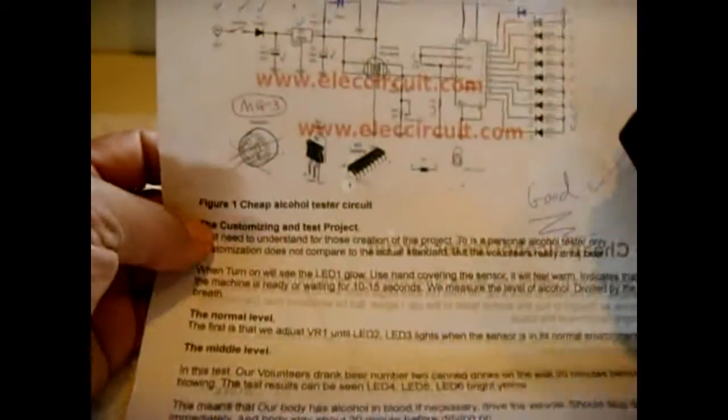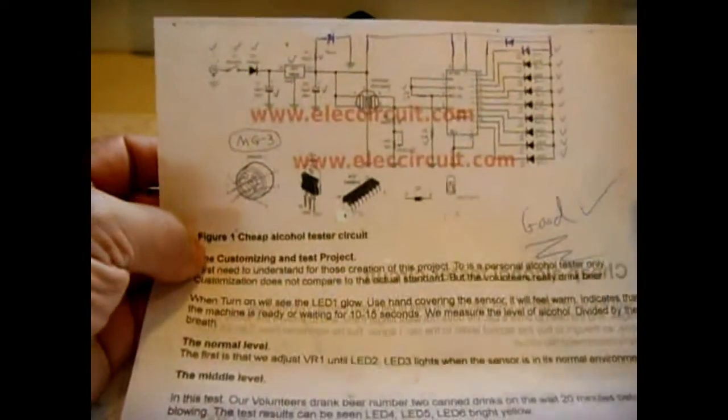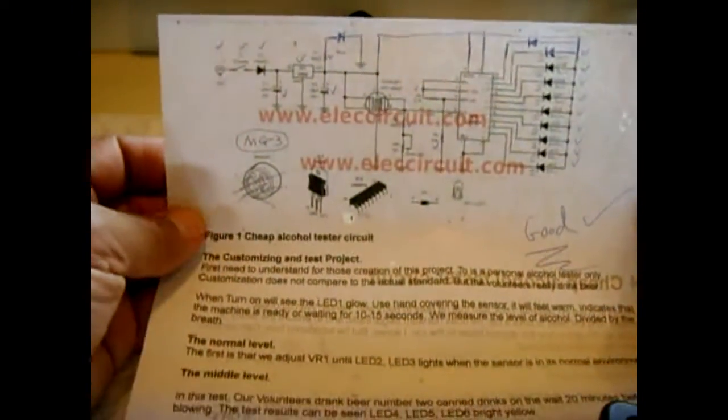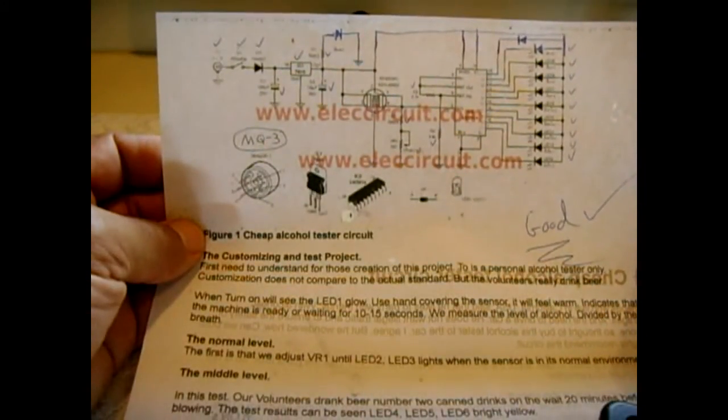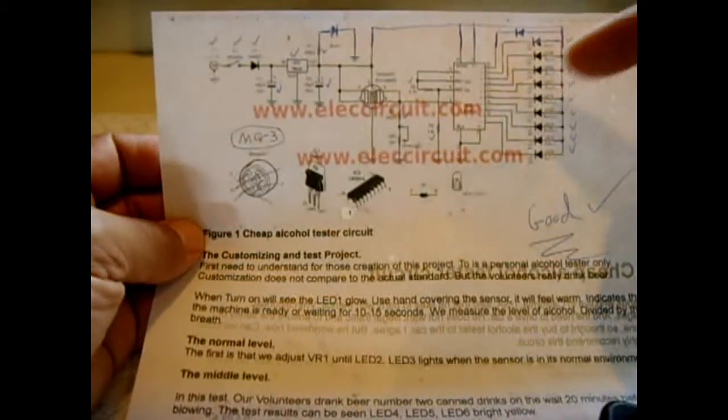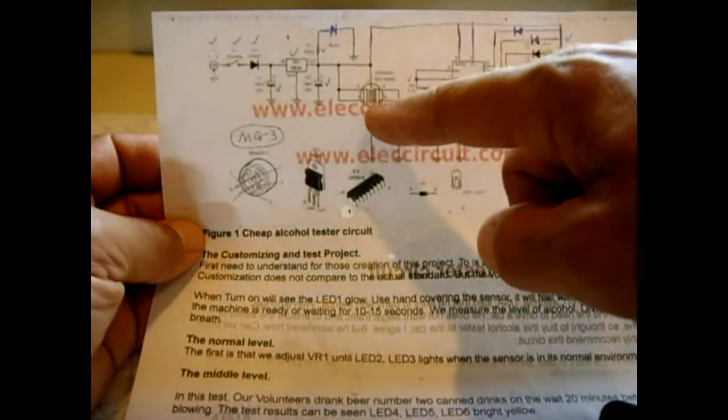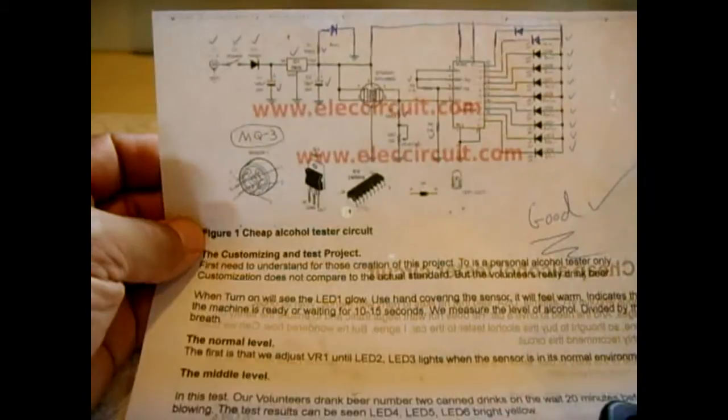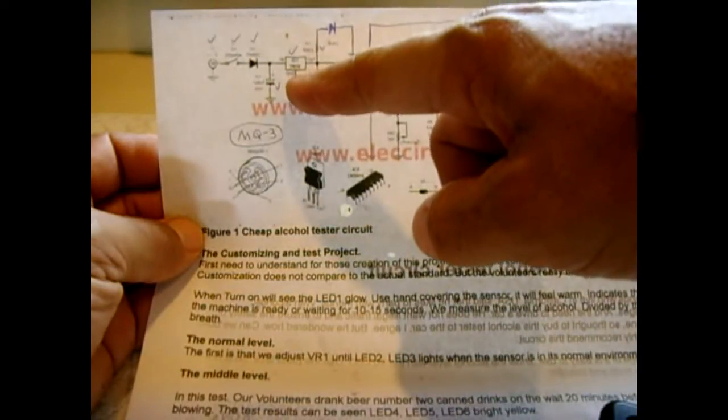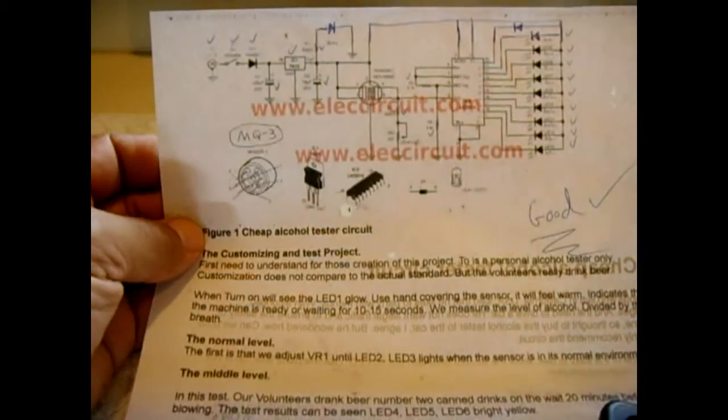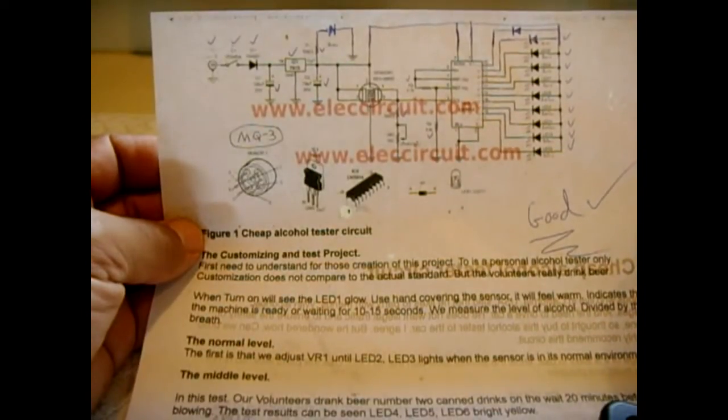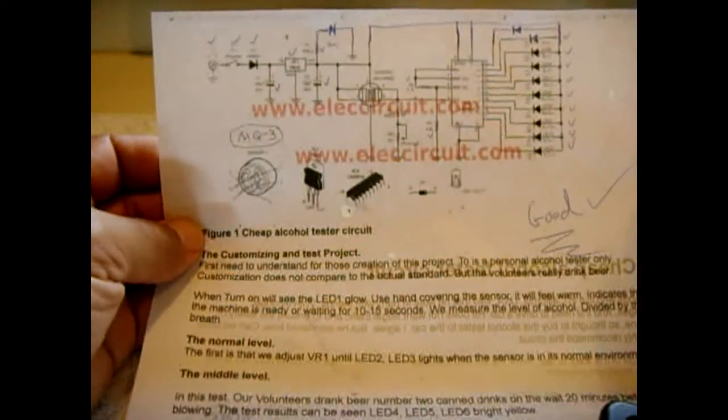Now the circuit I used is this one right here. It's very simple. It uses an LM3914, that's a bar code or a dot driver. This right here is the sensor. It has a 7805 voltage regulator, and a few resistors, a potentiometer, a couple of capacitors, a diode, and that's about it.